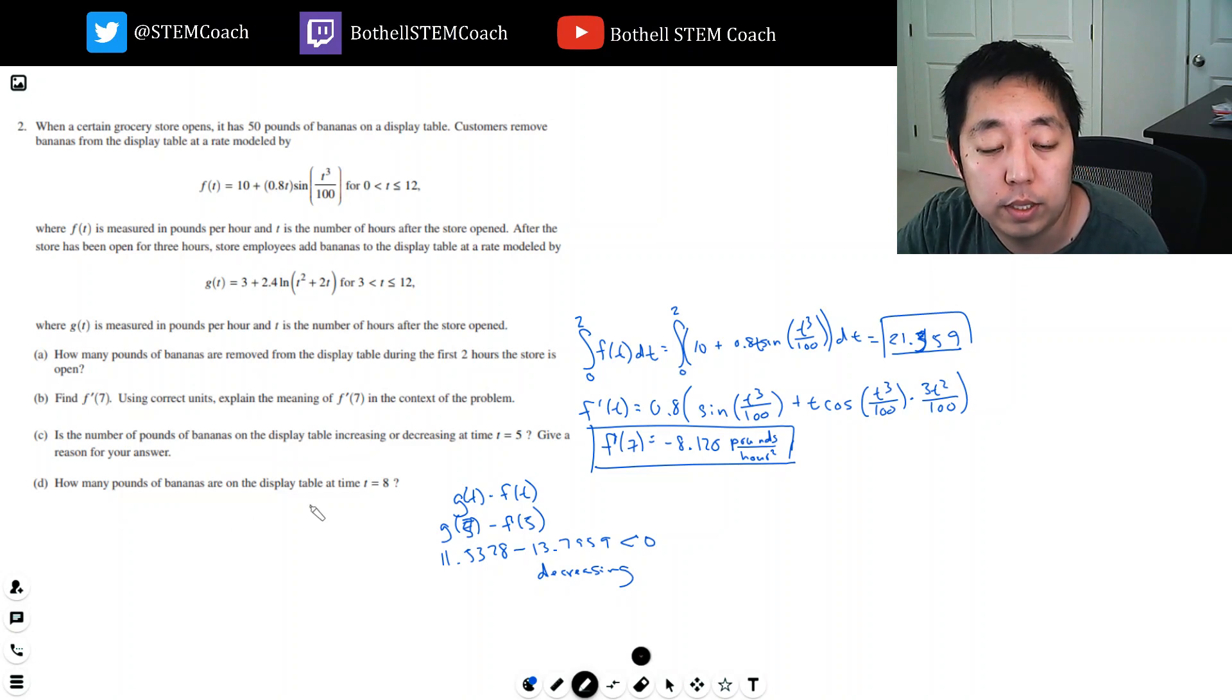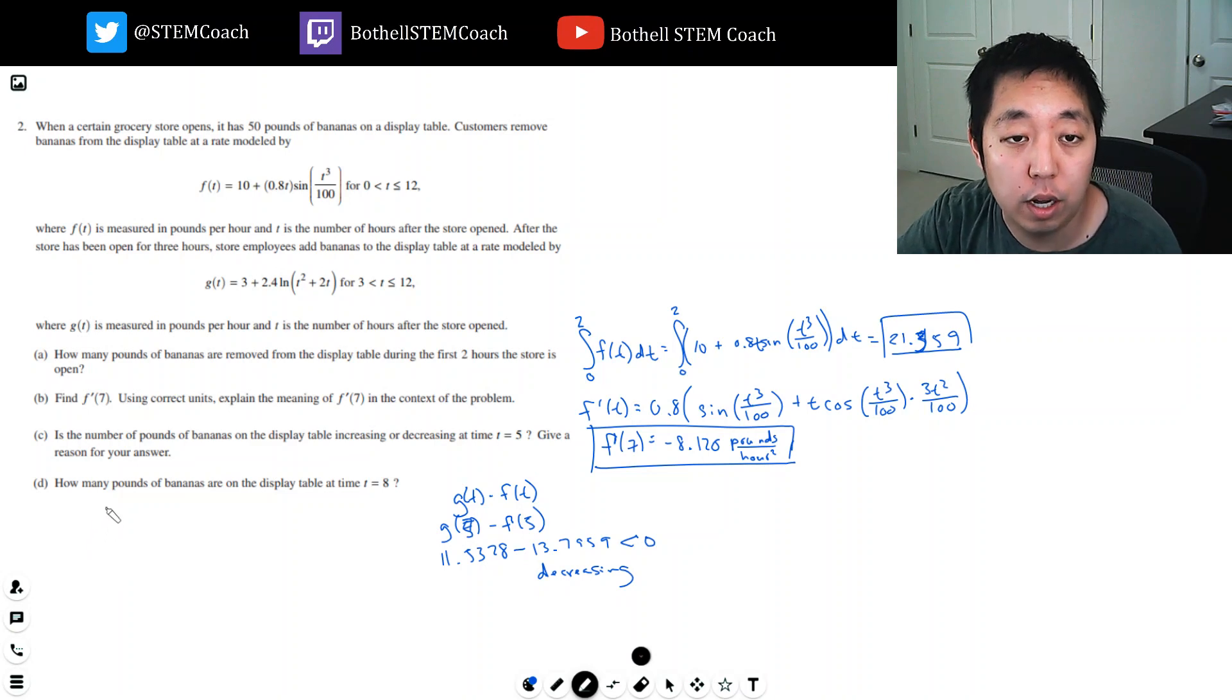Part D: How many pounds of bananas are displayed at the table at time t equals 8? The way you want to think of it is, I started off with how many bananas? I started off with 50. And then I took away this many bananas from 0 to 8 of f(t) dt. And I added in bananas, but I only added in bananas from 3 to 8. So 3 to 8, g(t) dt. This is the setup. You would do each of these integrals separately.